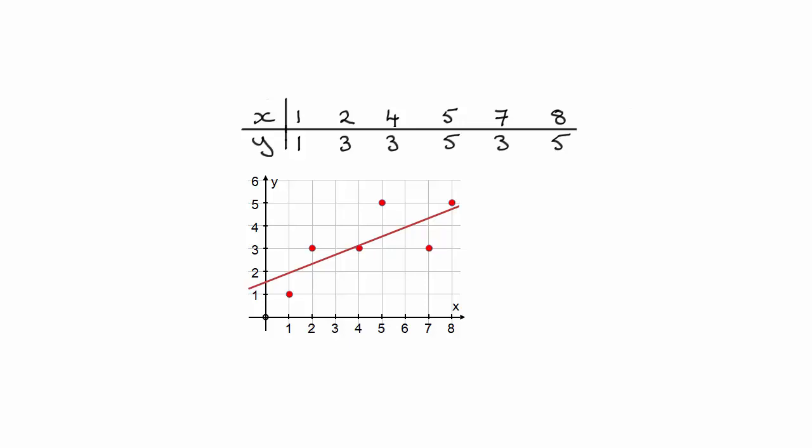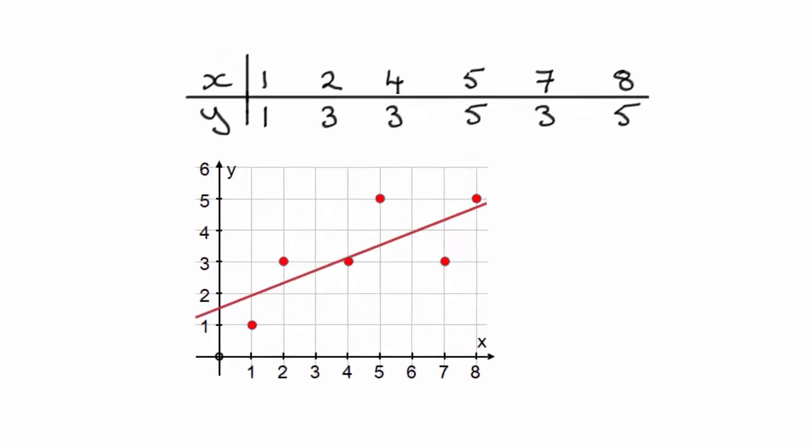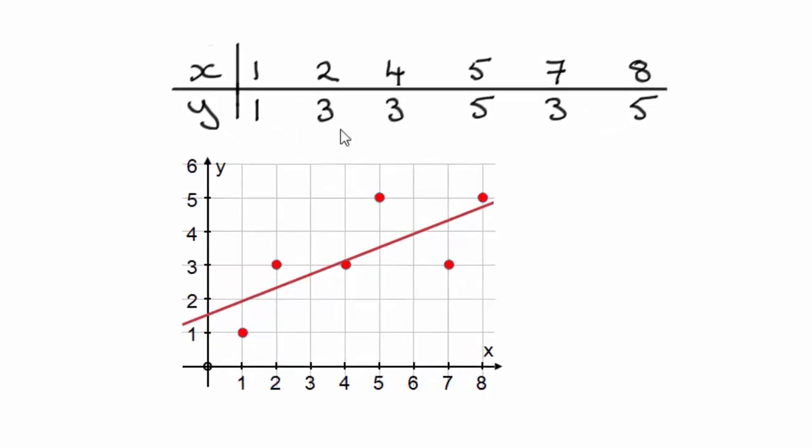Hi. Now if you watched the previous video in this series, what I did was have this table here of values of x and y. Y was the dependent variable, it depended on what we had for x, and I drew you a scatter diagram of those points and we drew on the line of best fit.